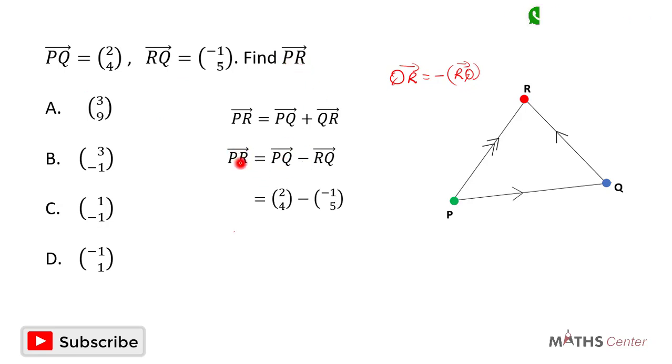So when we do that, the vector PR will be equal to the vector PQ, which is (2,4), minus the vector RQ, which is (-1,5). 2 minus negative 1 will give us 3, and 4 minus 5 will give us negative 1.